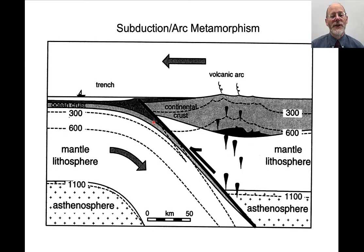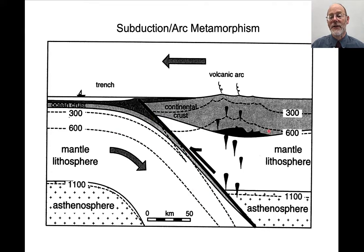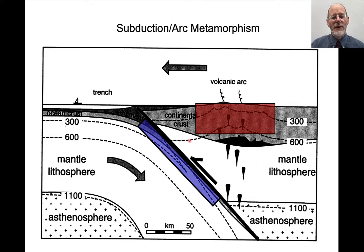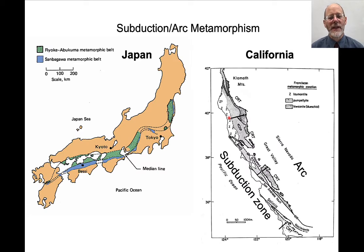In subduction zones, there are two main places where metamorphic rocks form. As the subducting slab goes down, it catalyzes partial melting of the mantle, creating a volcanic arc. Isotherms show depth versus temperature relationships — for example, 300°C and 600°C depths. We talk about two regions: one with relatively low temperatures and high pressures, and one with relatively high temperatures and low pressures, characteristic of the subduction zone and volcanic arc respectively. This paired metamorphism is seen in many ancient subduction zones.